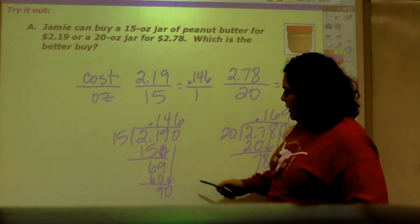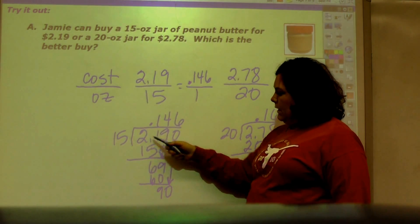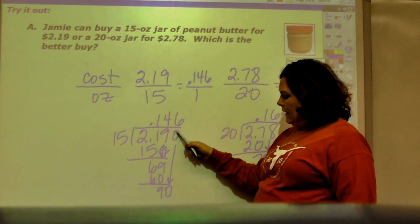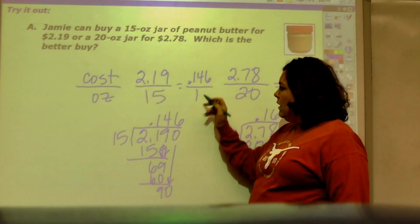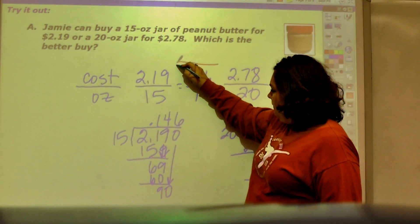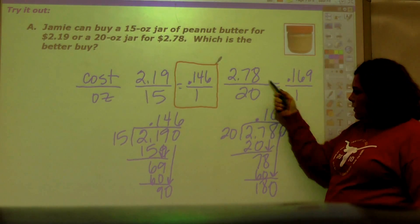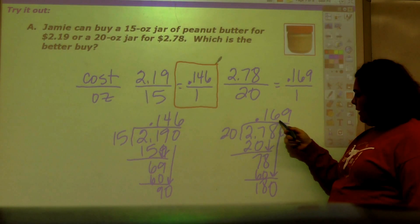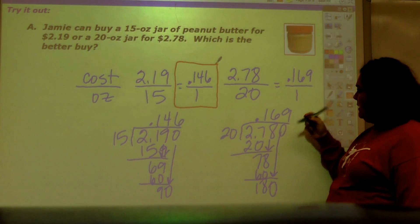This is one of those that I did divide by. So 2.19 divided by 15, and I got 14, and then I still had to add a zero, bring it down to get this place with no remainders. So for 15 ounces, this is the unit rate. And then 2.78 divided by 20, and to zero it out, I got basically 16.9 cents or 17 cents.